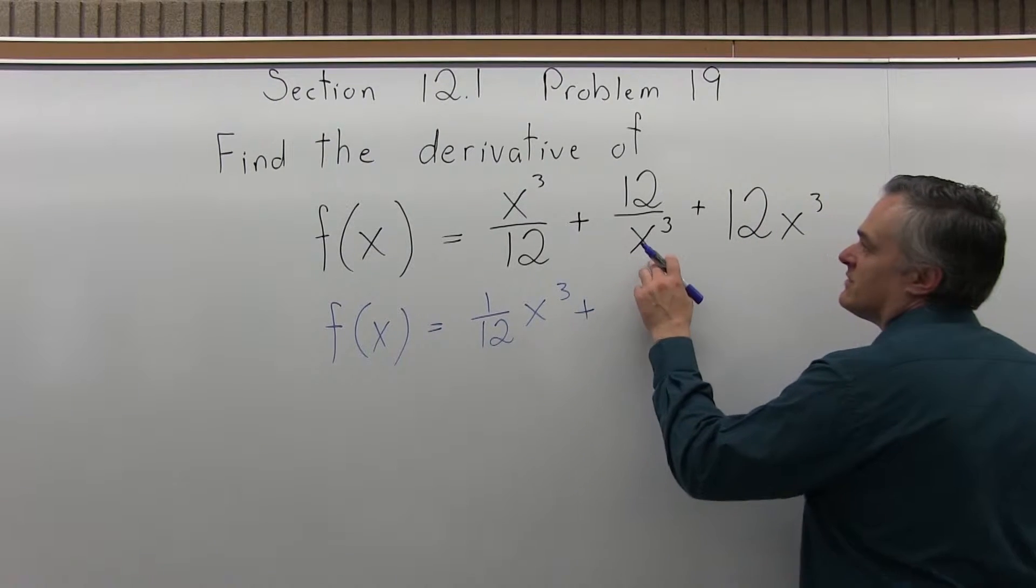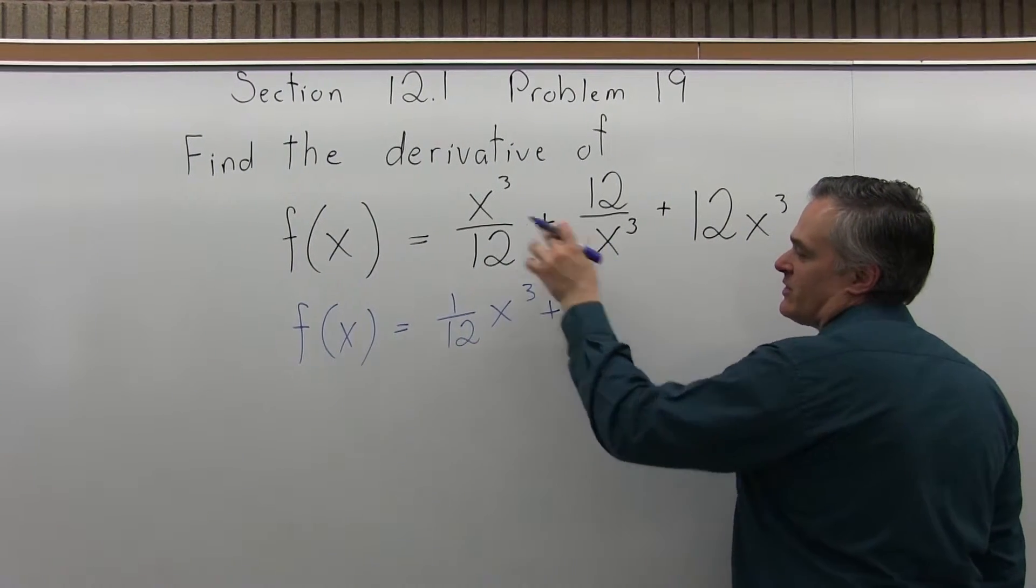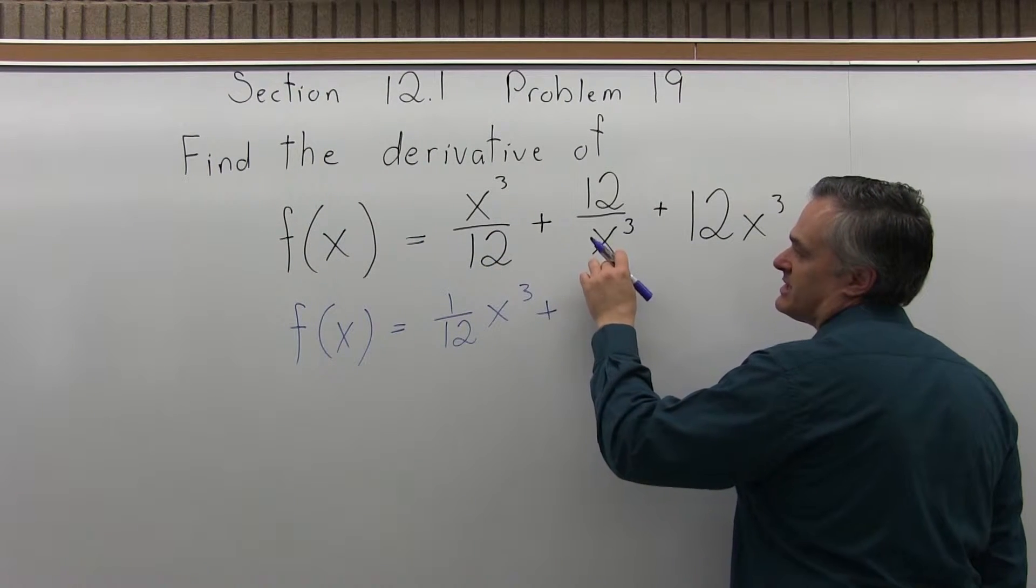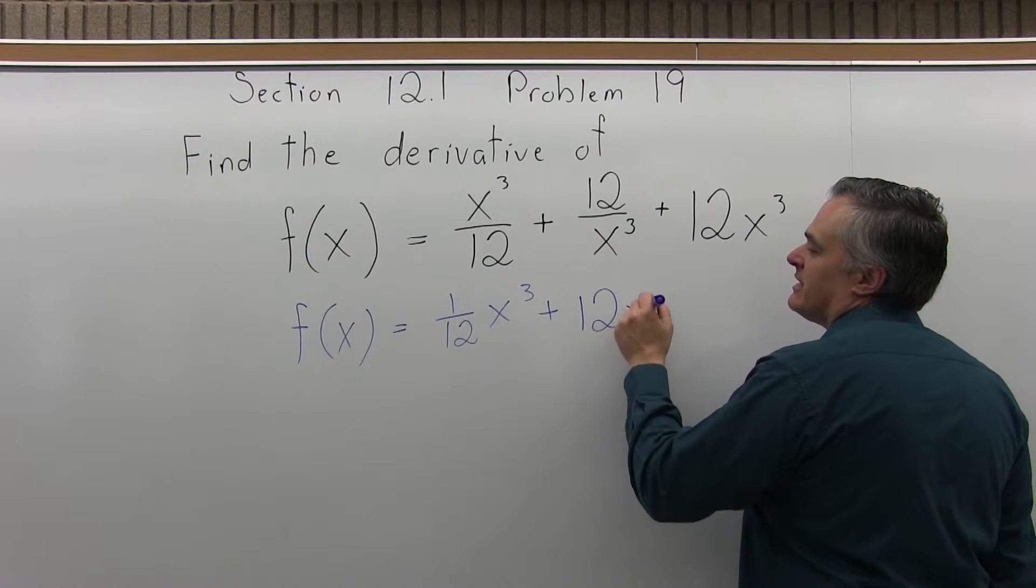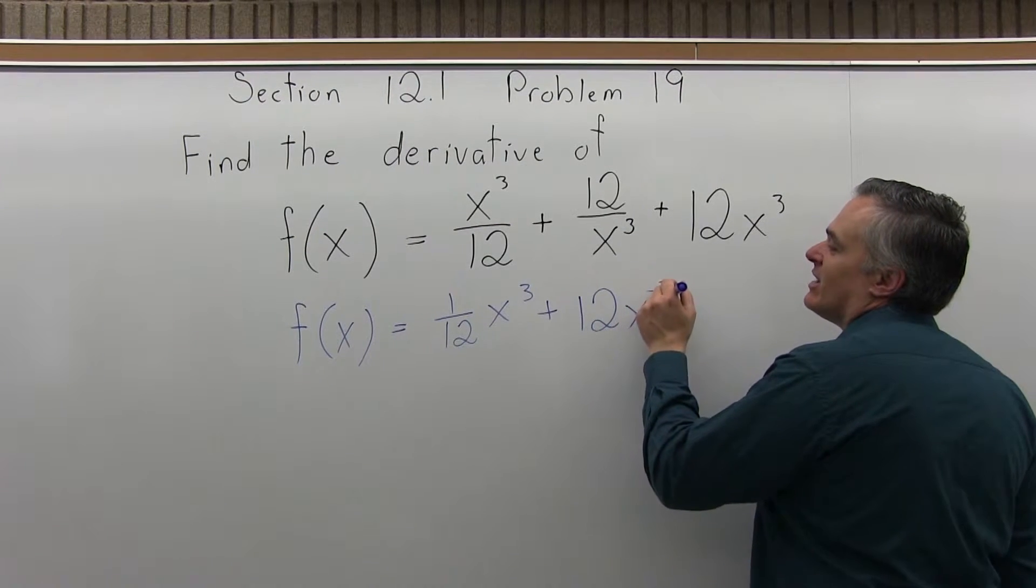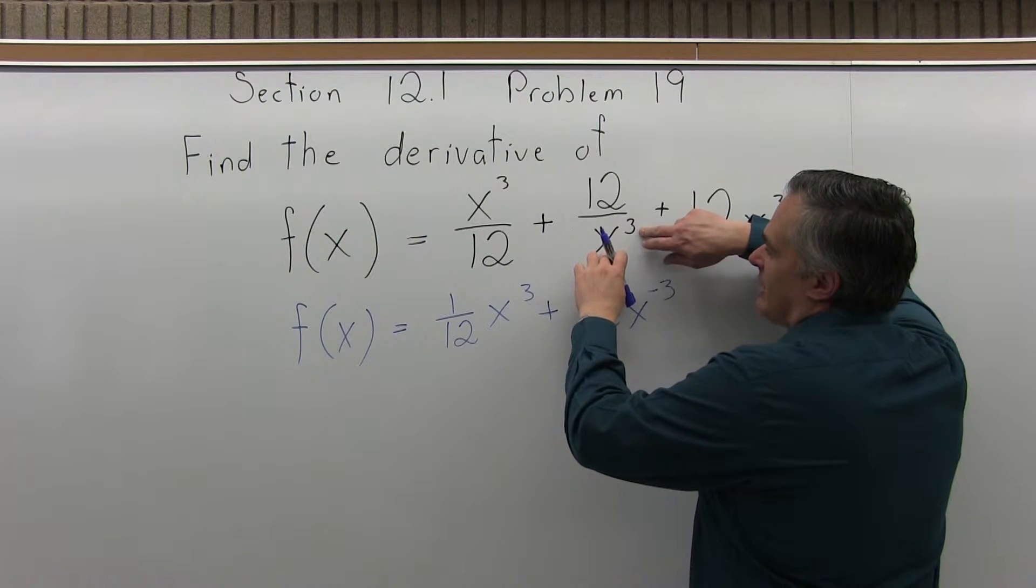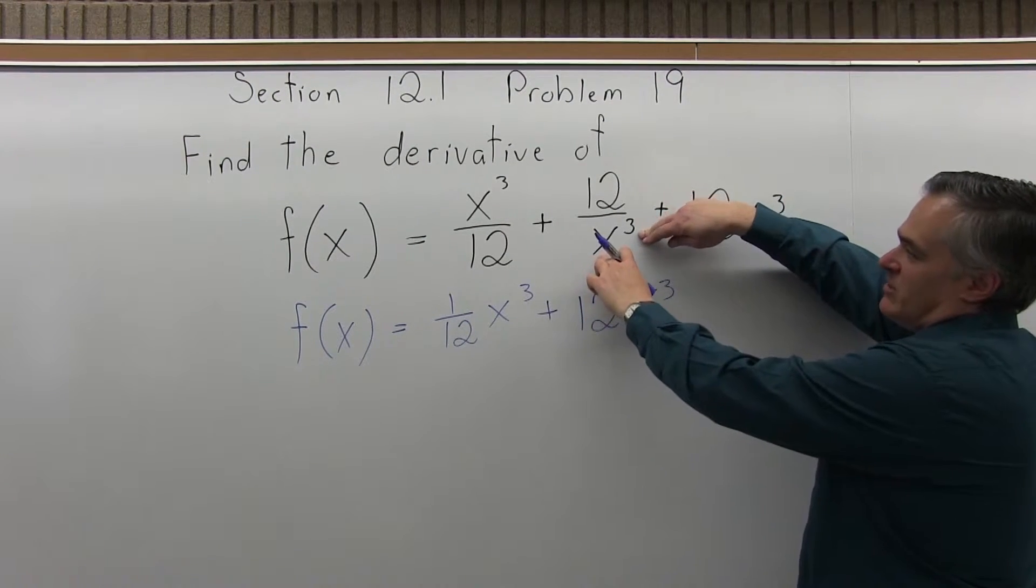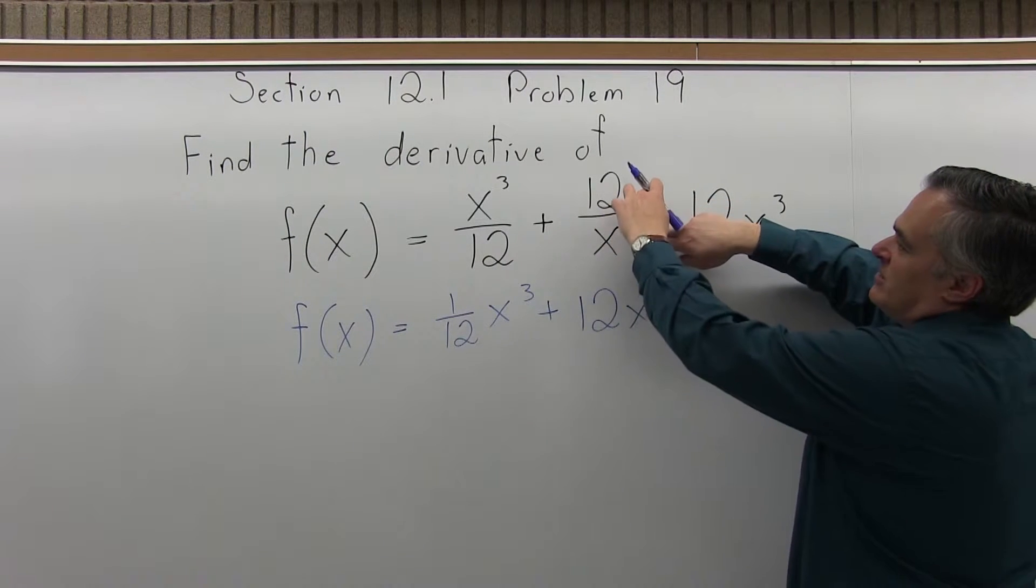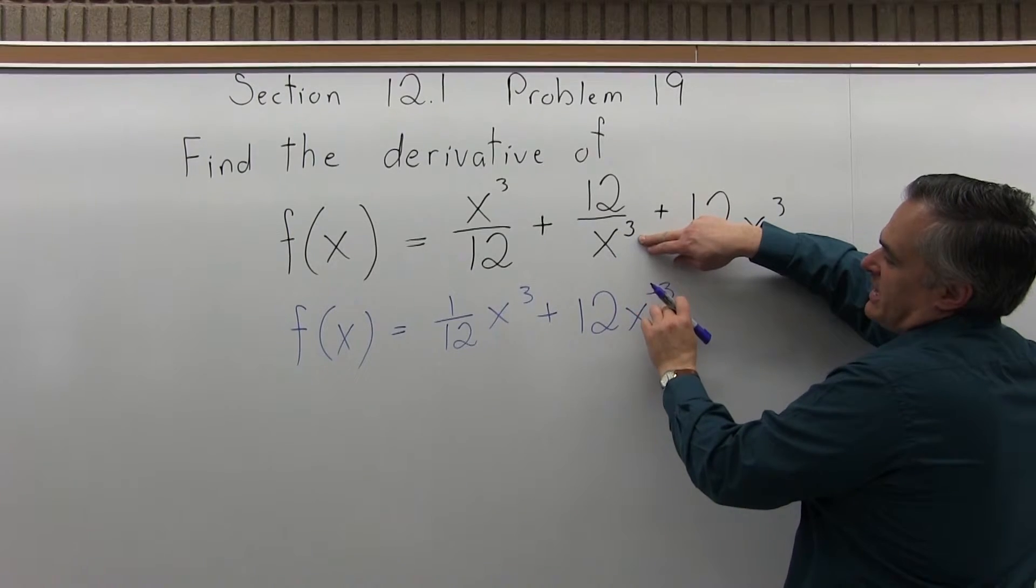The middle piece of the function, 12/x³, has to be rewritten. The first piece I don't really have to, but the middle piece I have to. This has to be written as 12x⁻³. The x³ in the denominator, I cannot leave it in the denominator. I cannot have a variable in the denominator when I do my derivative. So it comes up into the numerator by changing the exponent to a negative three.